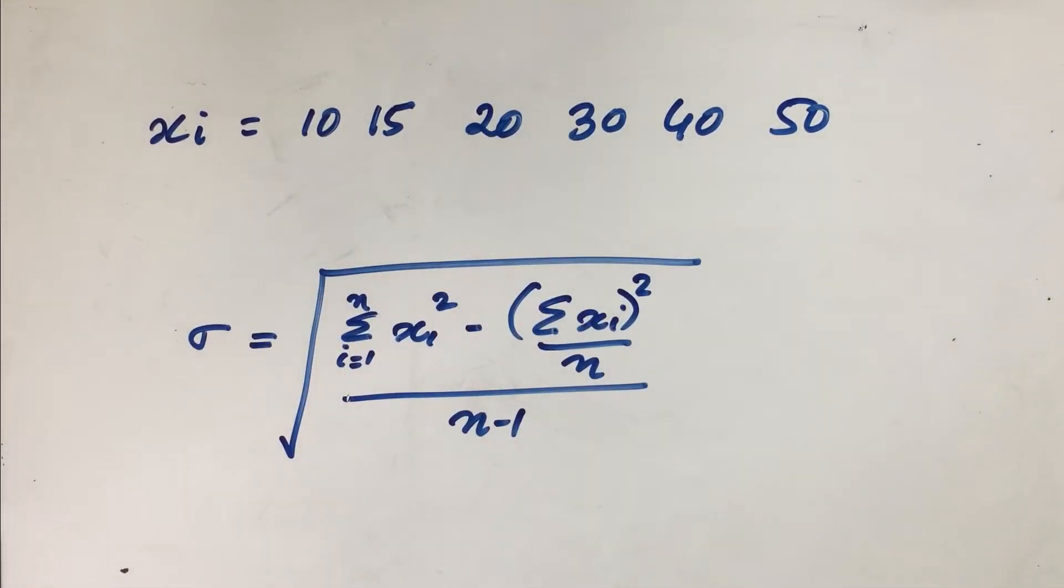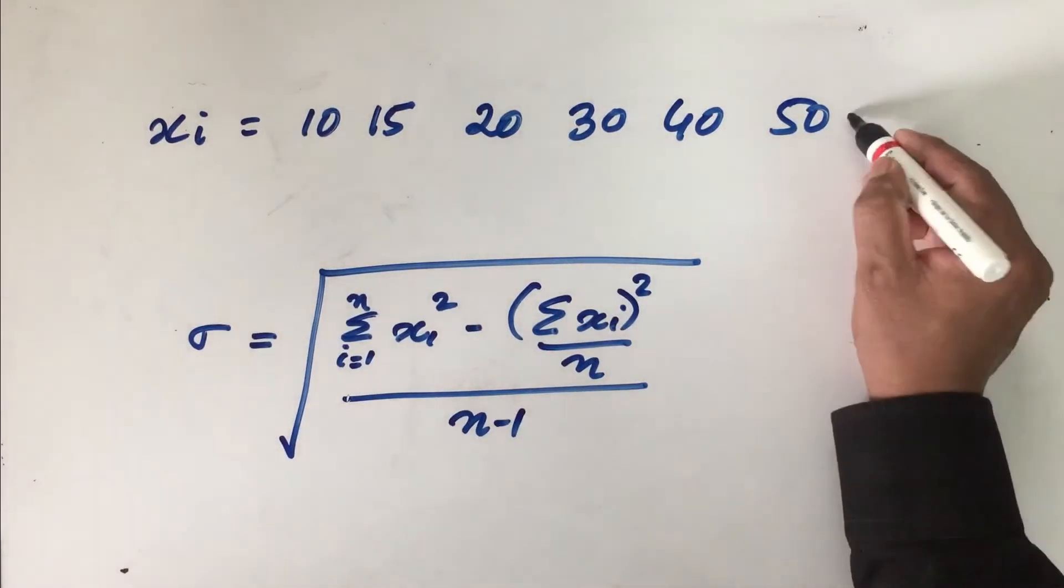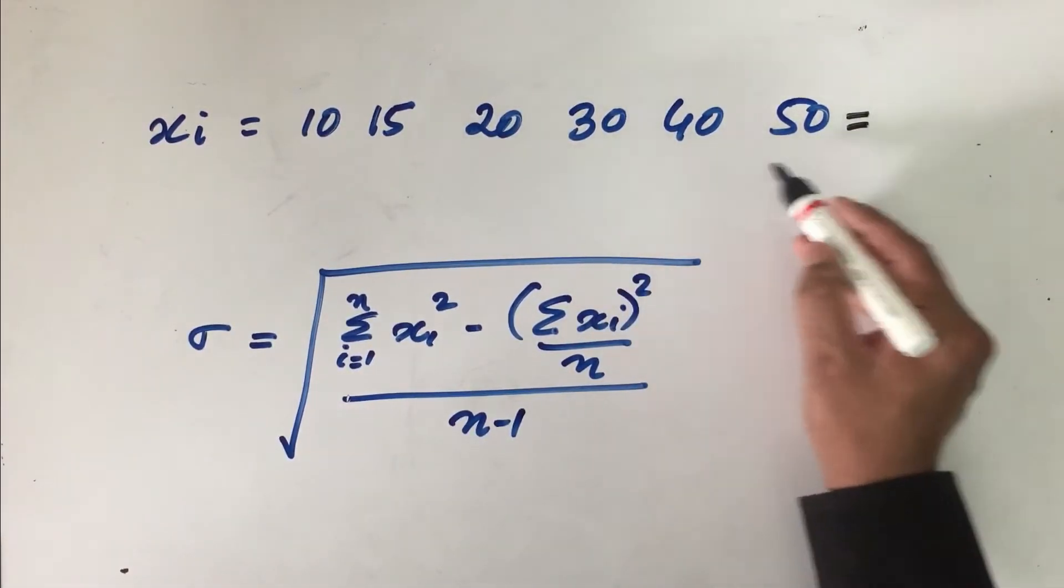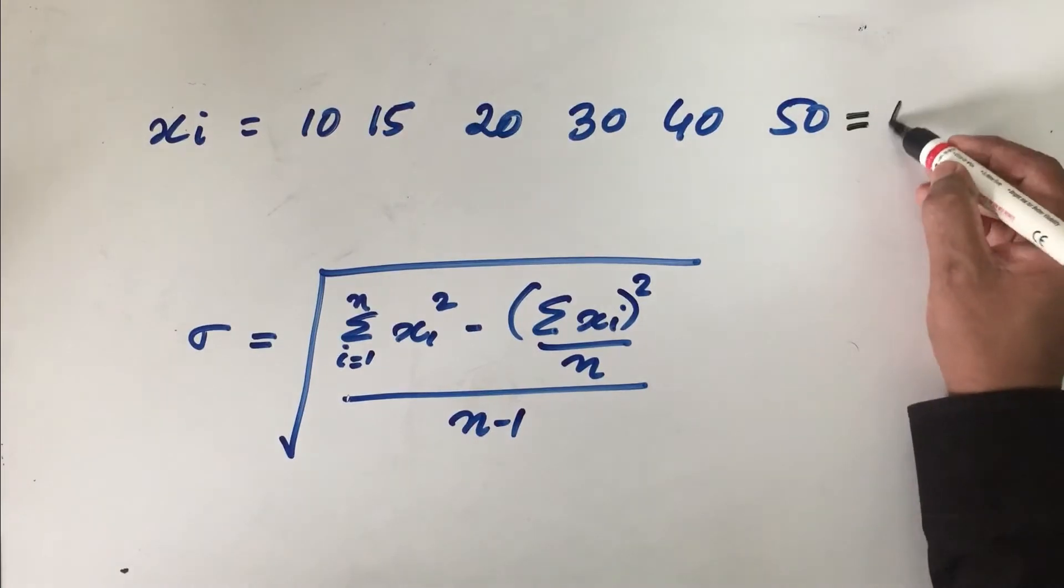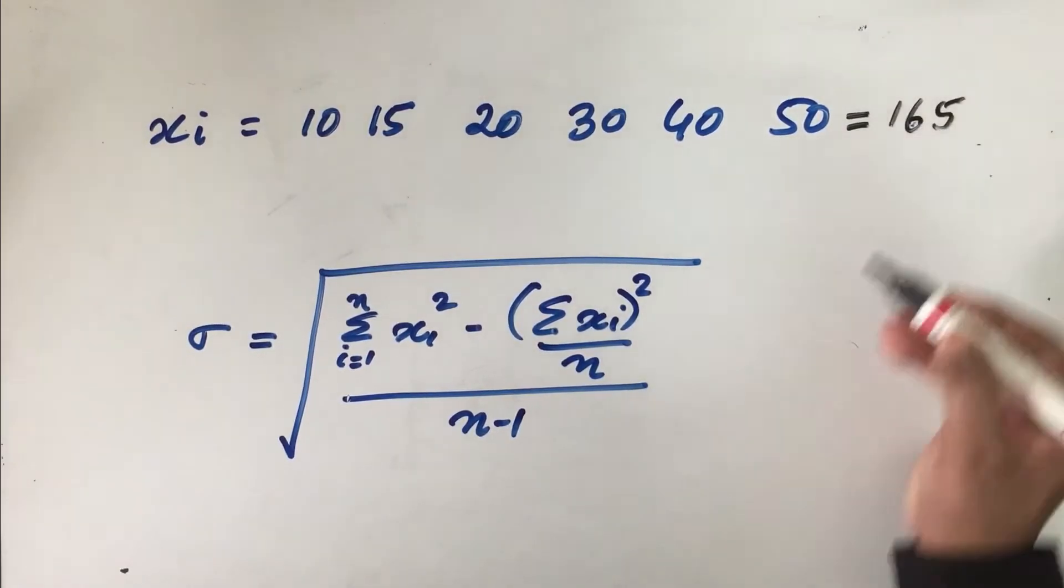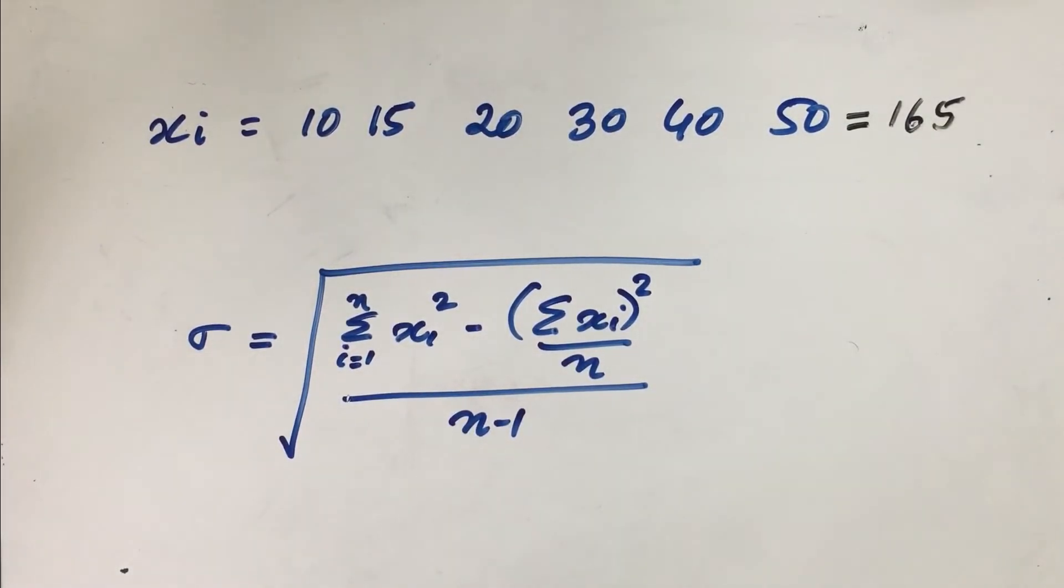Now for example, this total - we know that this is equal to 165. This value we got.